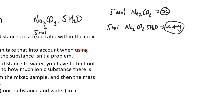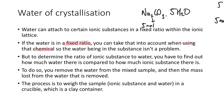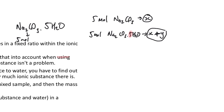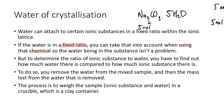We're looking for this ratio — what number is that in a particular sample? If water is in a fixed ratio, you can take that into account when using the chemical so that you don't accidentally get too little. If you were to just weigh out x amount of sodium carbonate 5H₂O, you wouldn't get five moles of Na₂CO₃ — you would get something less than five moles. To determine the ratio of ionic substance to water, you have to find out how much water there is compared to how much ionic substance there is.